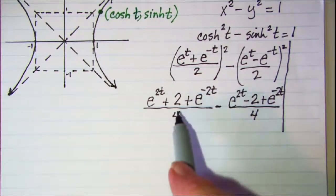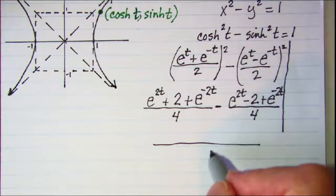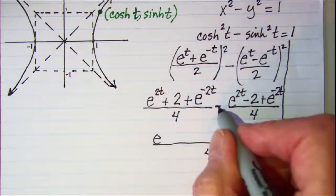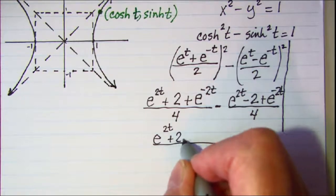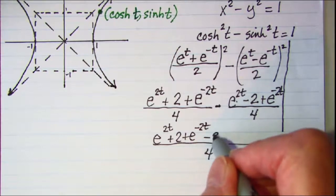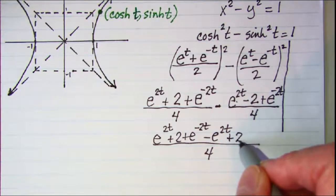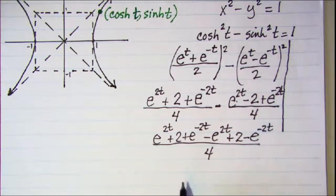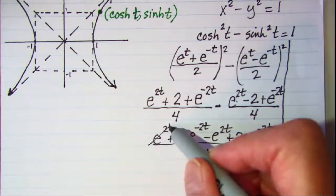When I add these two together I already have a common denominator of 4. Let me write this with this negative sign distributed through the trinomial. So e to the 2t plus 2 plus e to the negative 2t, and then minus e to the 2t, and then plus 2 and then minus e to the negative 2t. Well this e to the 2t and this negative e to the 2t cancels off.